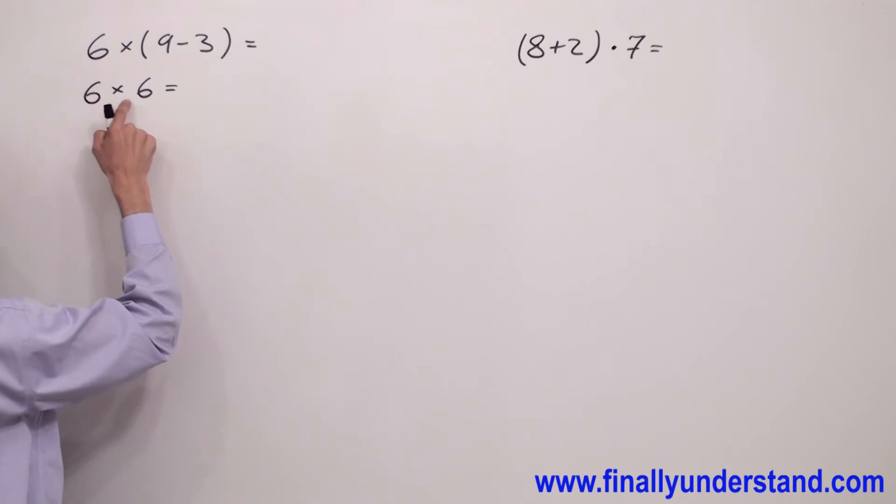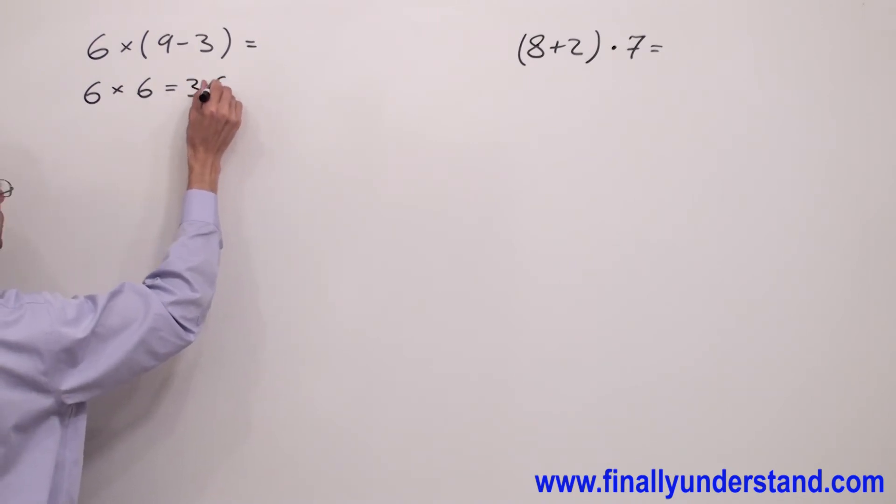Now I can perform the multiplication. 6 times 6 is equal to 36. And this is the solution to my problem.